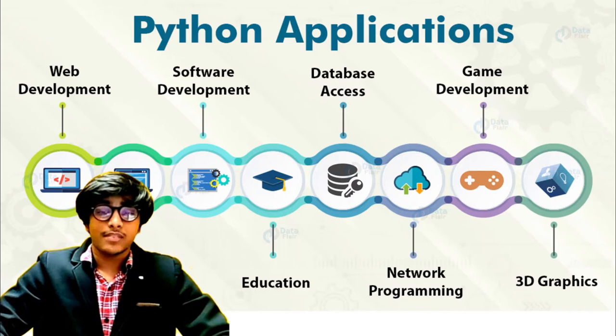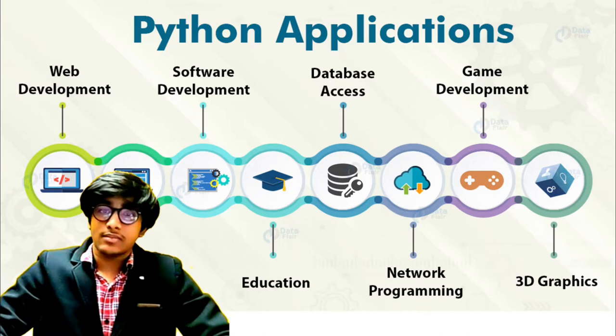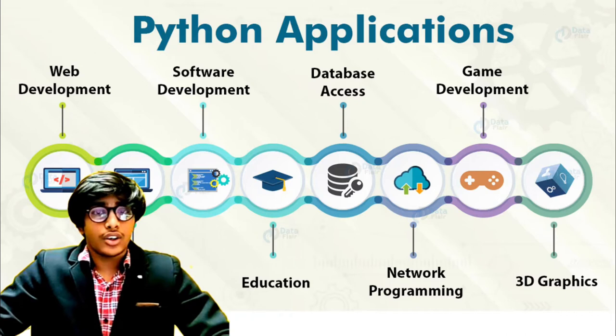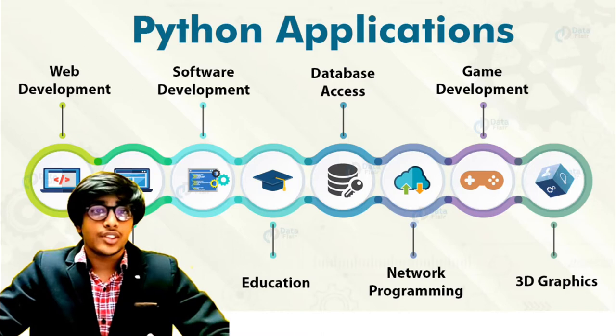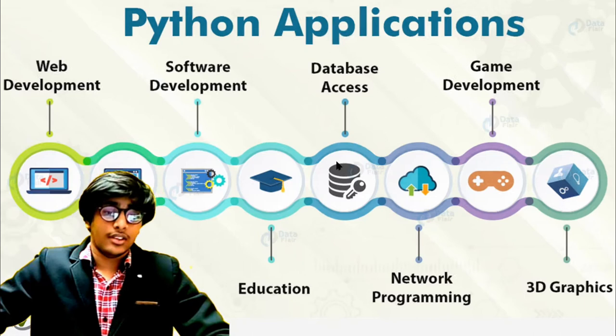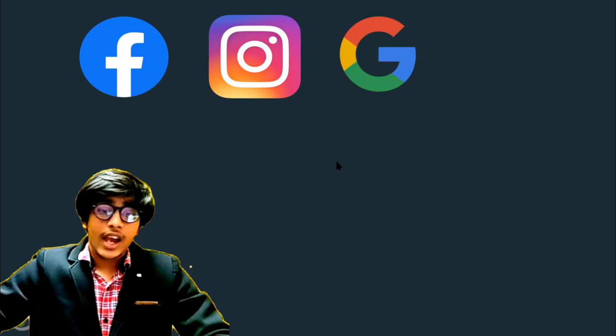Now let's see who all uses Python. Did you know that Facebook also uses Python in its backend? Most of Instagram's structure and framework was designed using the Python Django framework. As I told you, Google uses Python in its backend, and YouTube — a daughter company of Google — also uses Python. Even Quora uses Python to store its huge database of answers and questions.